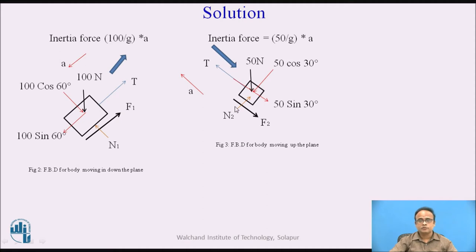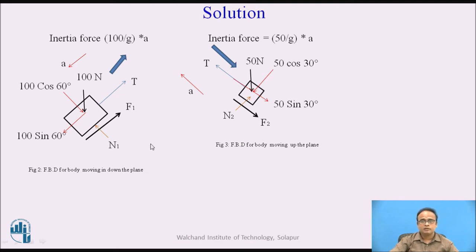There exists frictional force F2, acting opposite to the direction of motion. There is also a normal reaction N2 at the point of contact of the 50 N block and the inclined surface. The direction of motion of the 50 N block and the direction of the 100 N block are both indicated. This free body diagram is very important for writing the equations, and from those equations we will obtain the unknowns — that is, the acceleration of the system and the tension in the string.